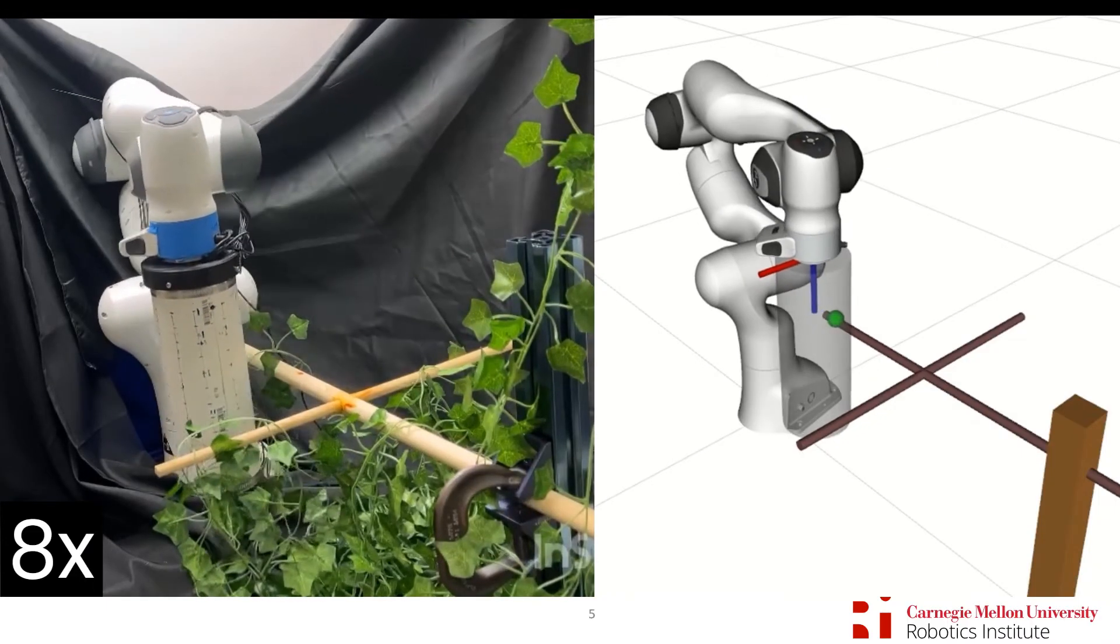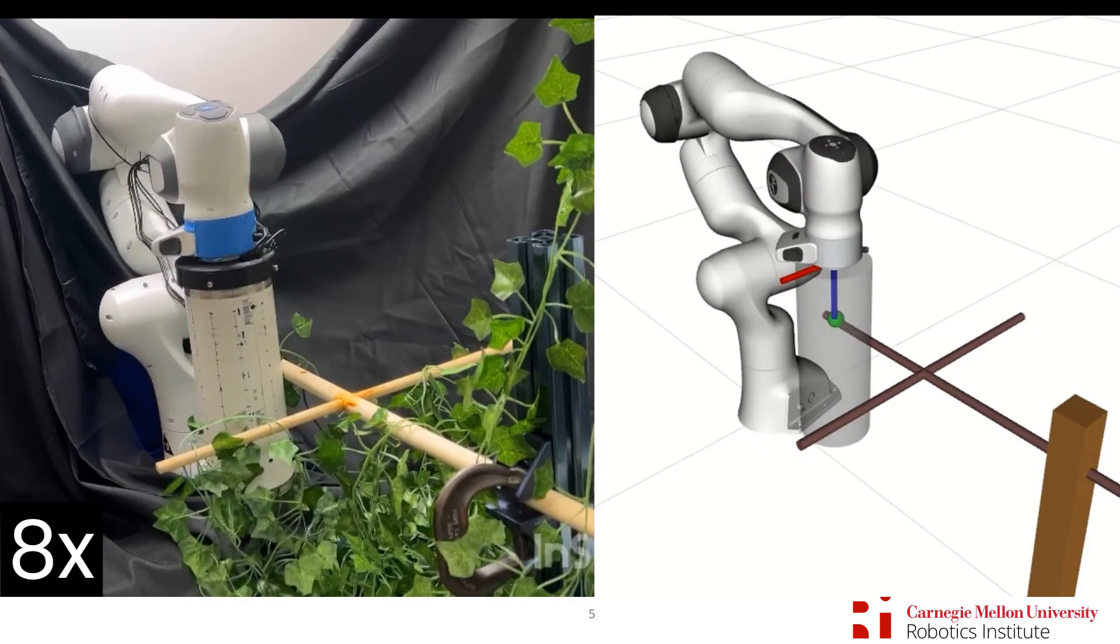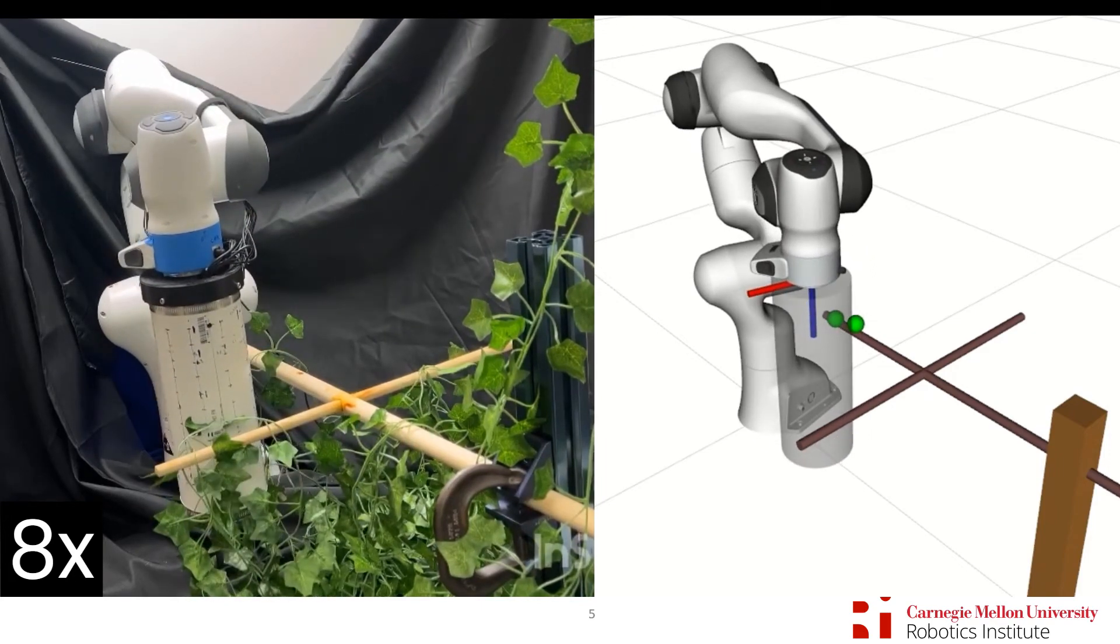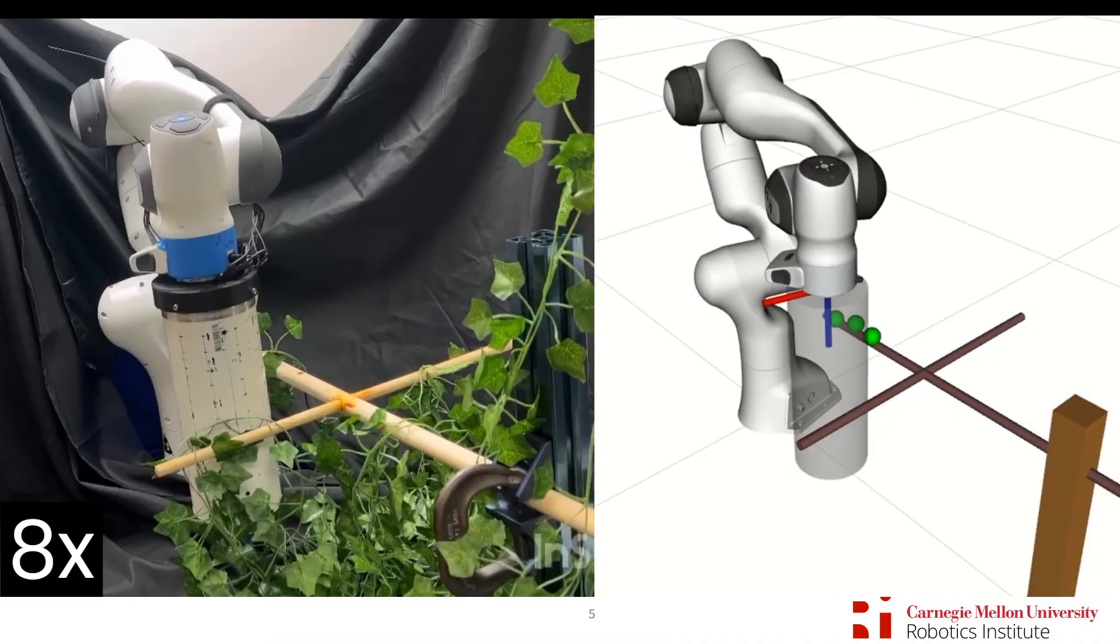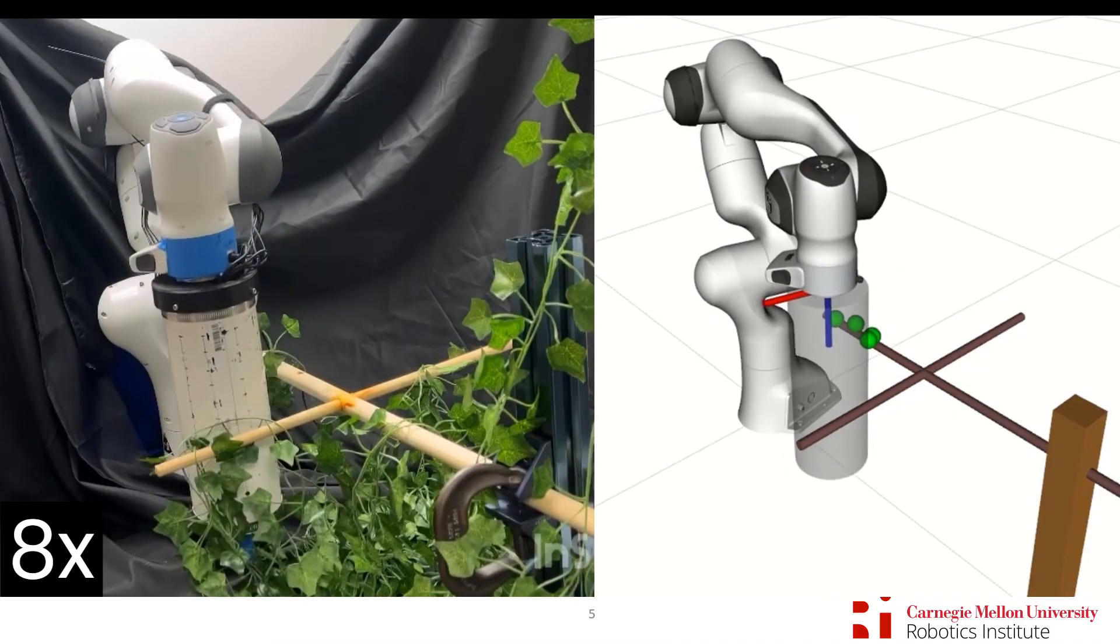Given that we can estimate contact point on the end effector, we show another application of haptic mapping, where the robot without using vision can feel out where the rigid object is.